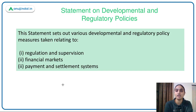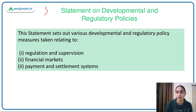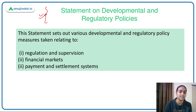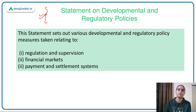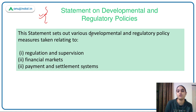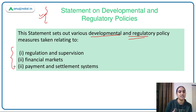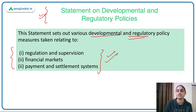Now let's look at the Statement on Development and Regulatory Policies, which comes along with the monetary policy statement. It includes different measures that RBI brings in relation to developmental and regulatory policy — covering payment and settlement systems, financial markets, regulation, and supervision. Three types of decisions are covered: one set related to regulation and supervision, a second set related to financial markets, and a third set about the payment and settlement system.